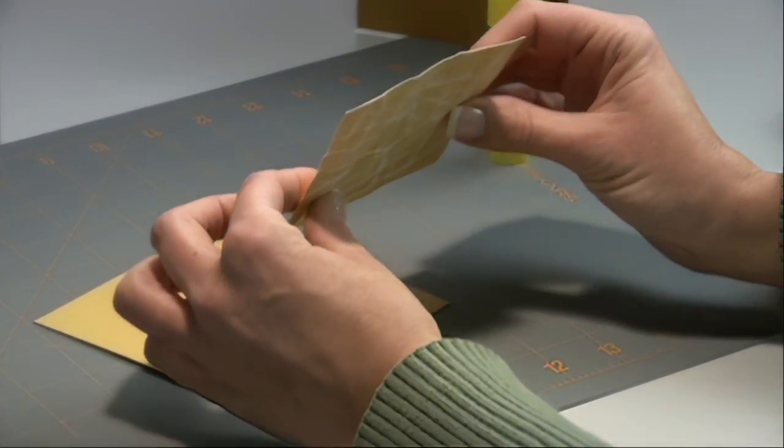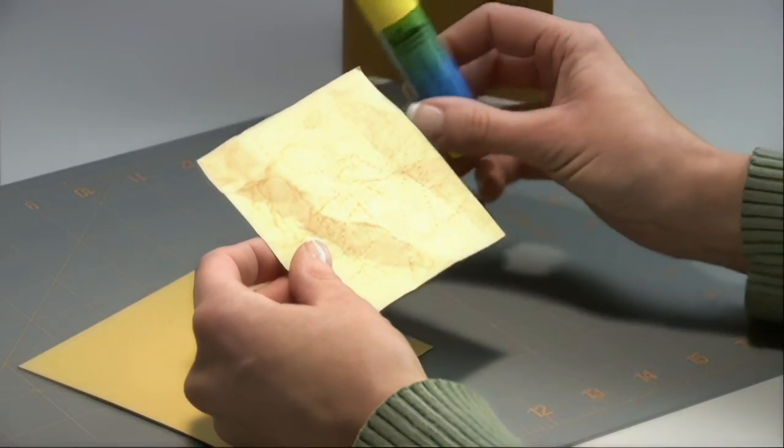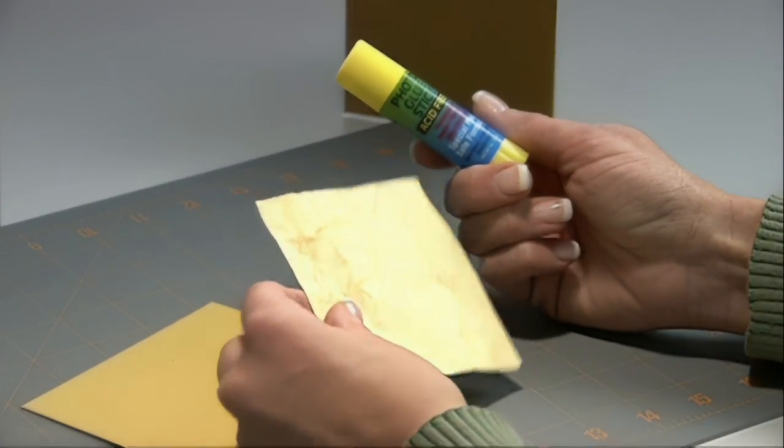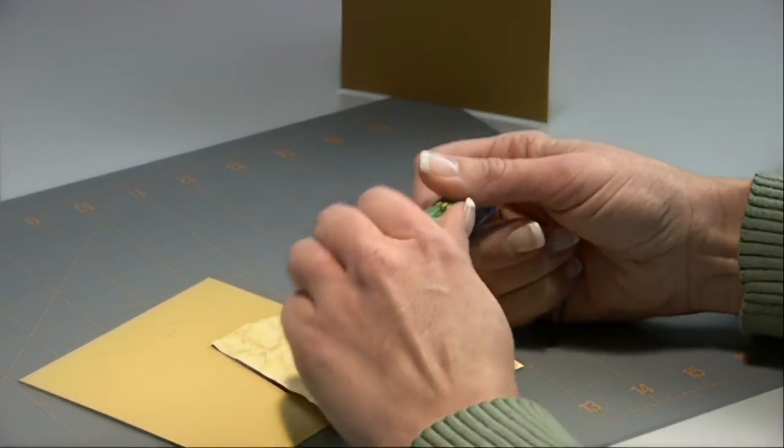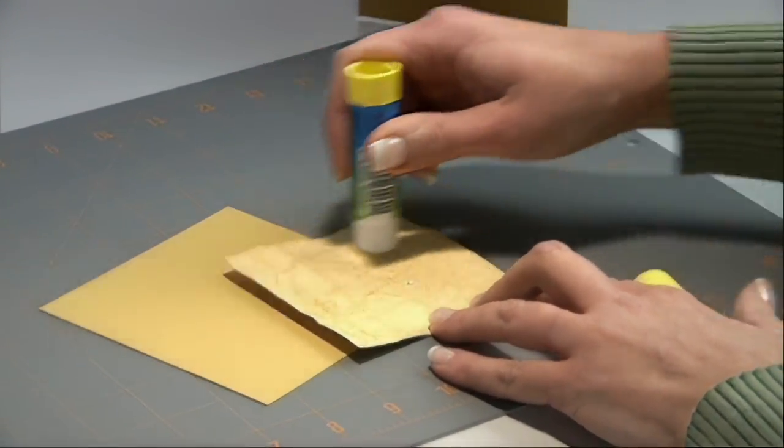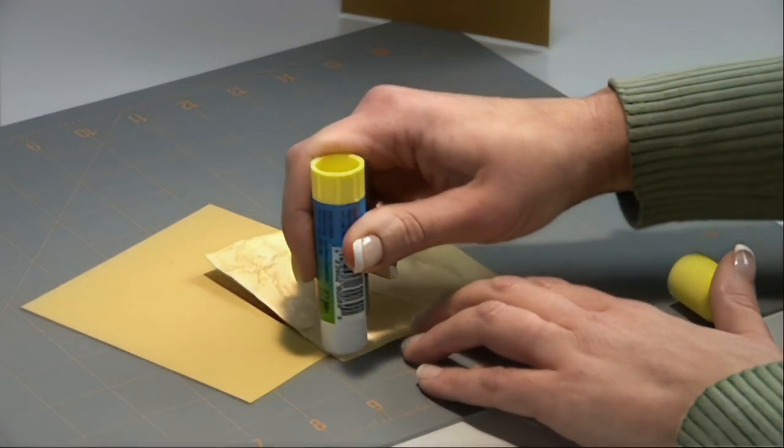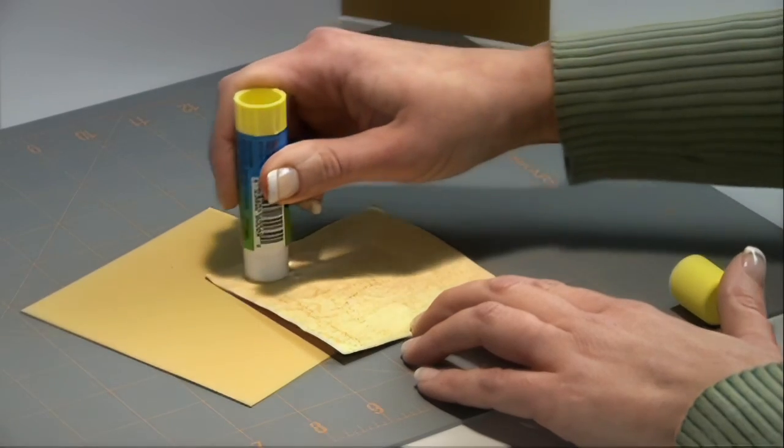Because we've sanded this and crumpled it, it's a little bit more challenging to adhere. So we're going to use our glue stick for this. Apply lots of glue to all the edges and center. The more glue the better in this case. Ensure that you get right up into the corners and all the edges.